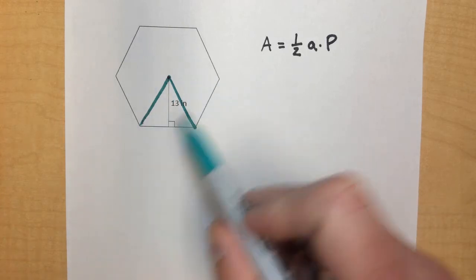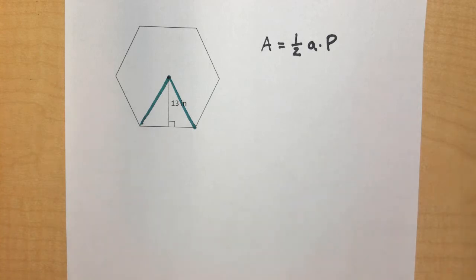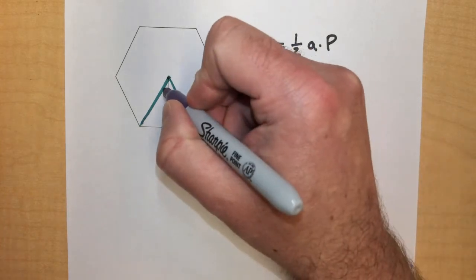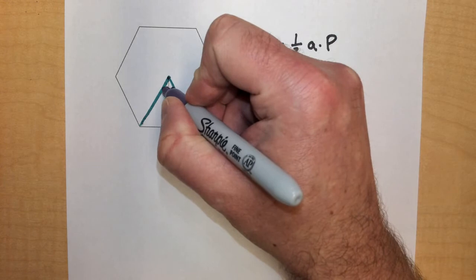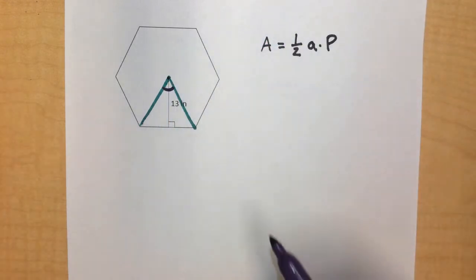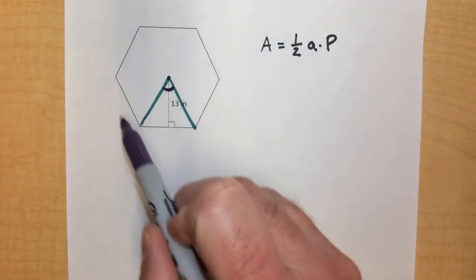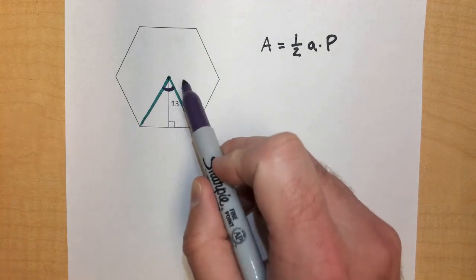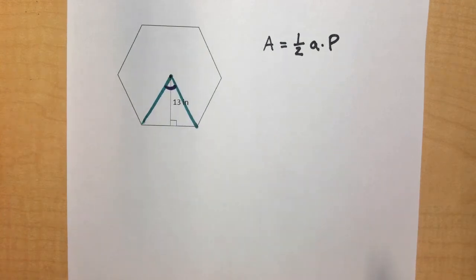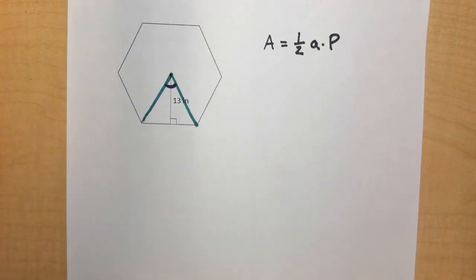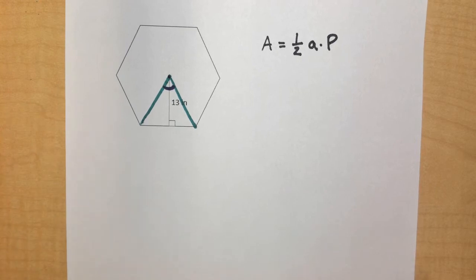Also, by drawing these radii, we've created a central angle here. A central angle is just an angle that's formed at the center of the shape. And because we have six congruent triangles, we also have six congruent interior central angles. And one thing that we're going to need to know is we're going to need to know that measurement in order to solve for the side.